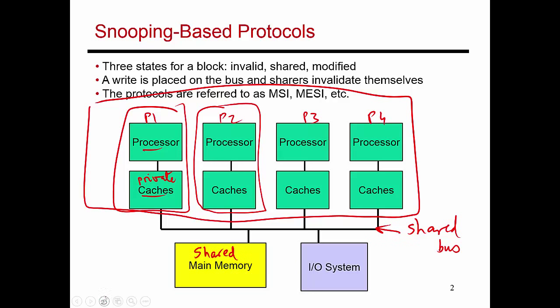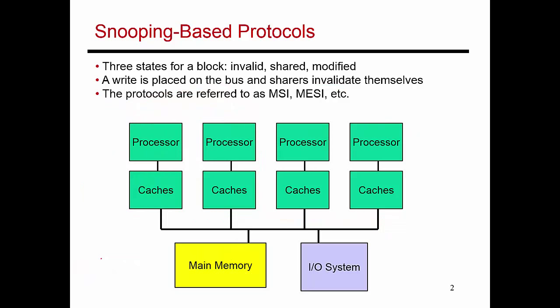Let's go through an example of how data might get placed in these caches and how different threads have to coordinate with each other. We'll assume we are running one large multi-threaded application on this multiprocessor system — P1 runs thread T1, P2 runs T2, P3 runs T3, P4 runs T4. Since these threads belong to a larger multi-threaded application, they may end up touching the same data structures, so there could be a physical location X that all of these threads end up accessing.